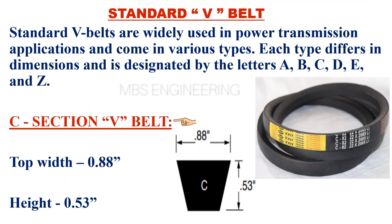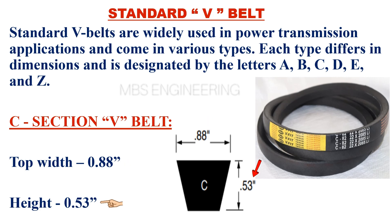The top width of the C-section V-belt is 0.88 inches. The height of the C-section V-belt is 0.53 inches. Please take a look at the figure that shows section C V-belt.